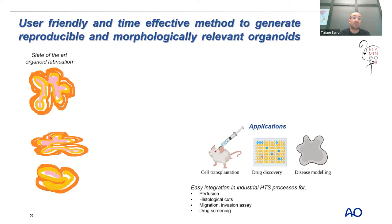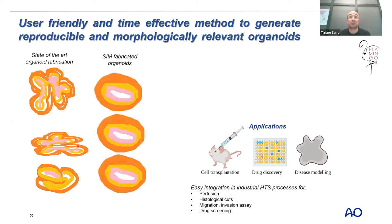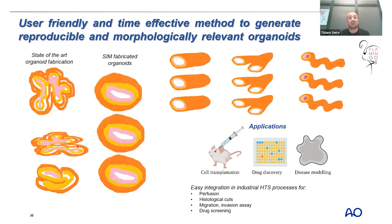Another interesting use of sound technology is to generate user-friendly and time-effective methods for producing reproducible, morphologically relevant organoids. The state of the art for organoids shows morphologically different samples from each other, which affects not only morphology but also drug diffusion. The idea is to use SIM to generate more reproducible and morphologically relevant organoids for drug discovery, disease modeling, and potentially in the future even for transplantation and regenerative medicine.